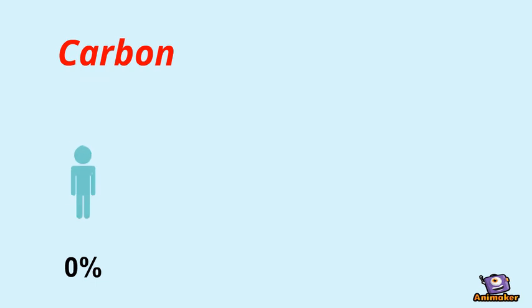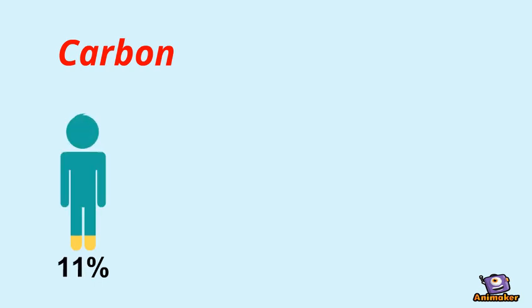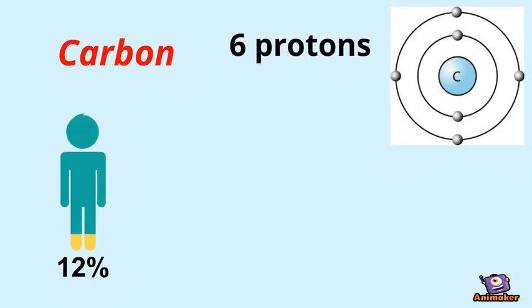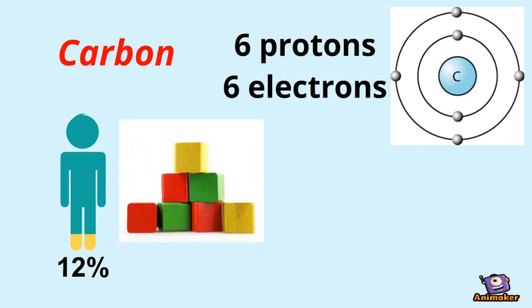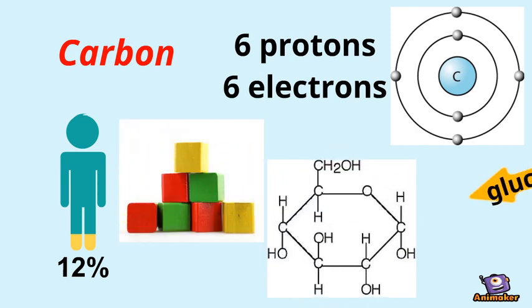Carbon makes up about twelve percent of the atoms in our body and contains six protons and electrons. Carbon is the building block of living things and is also found in sugars such as glucose.